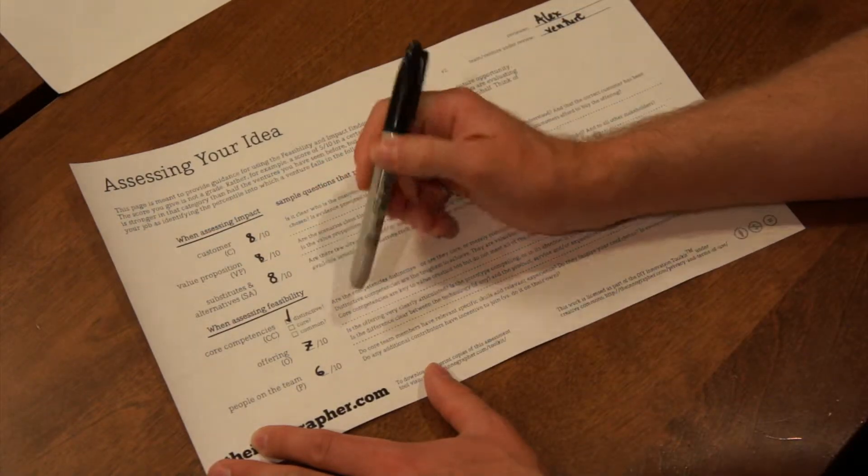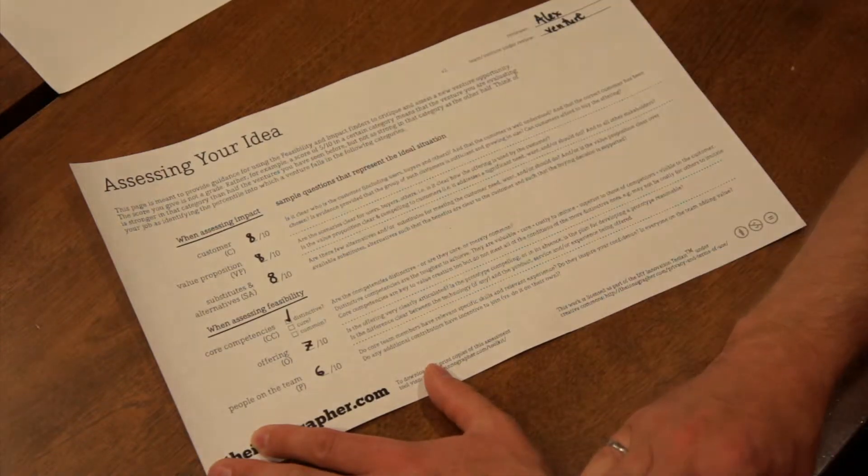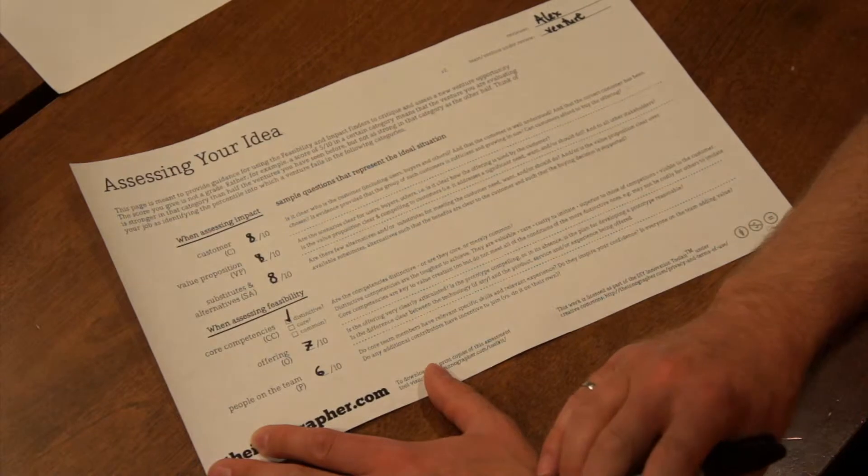Distinctive core competence, an offering score of seven and in this case the people on the team aren't as strong as they might be so a six out of ten.